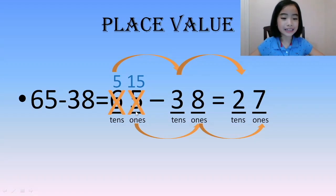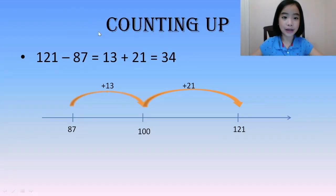So, we need to break a 10. 65 is equivalent to 5 tens and 15 ones. Now, we can subtract 15 ones minus 8 ones equals 7 ones. And 5 tens minus 3 tens equals 2 tens. The second strategy is counting up.